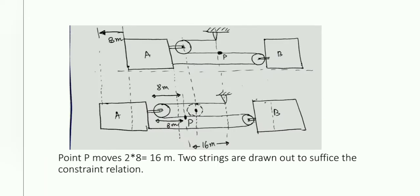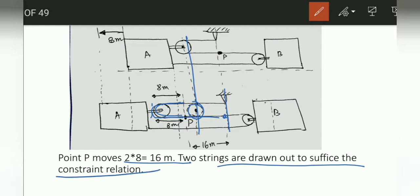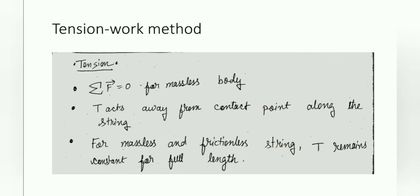In the neat diagram, this part is 8 and this part is 8, so 8 plus 8 equals 16 meters. This was the actual position of the pulley moving in the left direction, and this is the actual point P also moving with the string. Two strings are drawn out to satisfy the constraint relation — that's it.